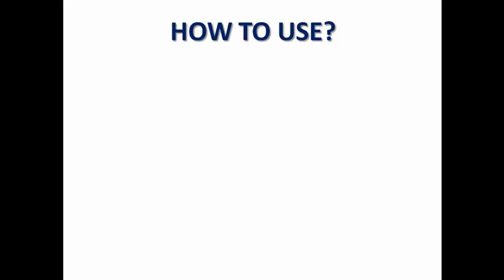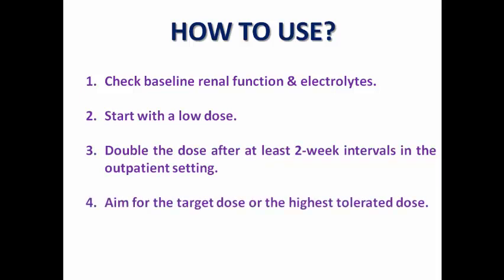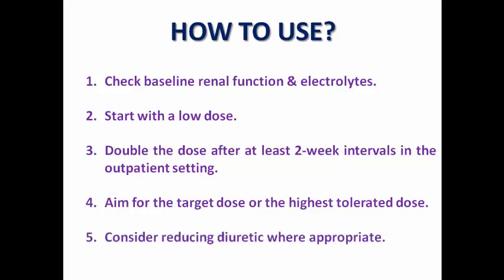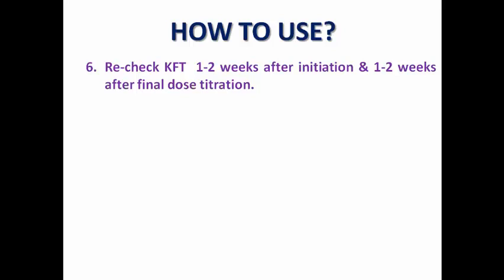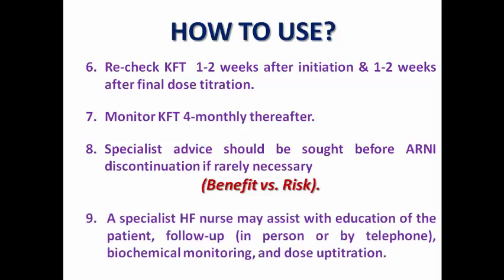The precautions when prescribing ARNI are nearly the same as with ACE inhibitors and ARBs. Check baseline kidney function and electrolytes. Start with a low dose and double it at intervals of at least two weeks, aiming for the target or highest tolerated dose. Consider reducing the diuretic dose where appropriate, given ARNI's significant natriuretic effect. Recheck kidney function one to two weeks after starting and after each dose increase, then monitor every four months. Specialist advice should be sought before stopping ARNI, to assess benefit versus risk. A specialist heart failure nurse may assist with medication and uptitration.